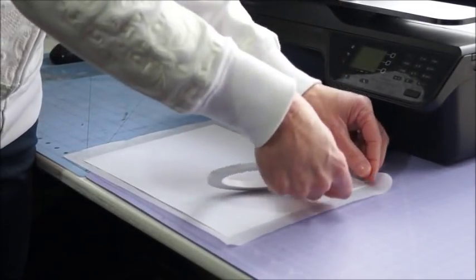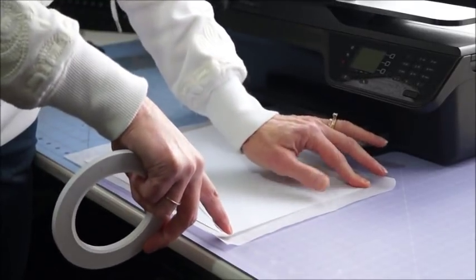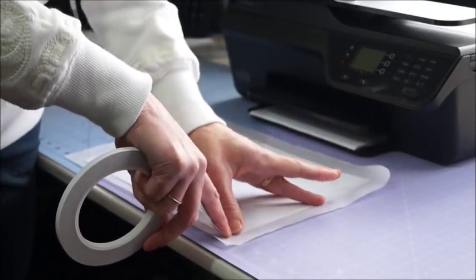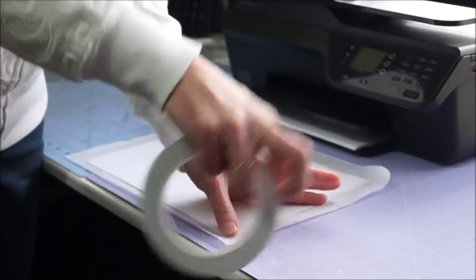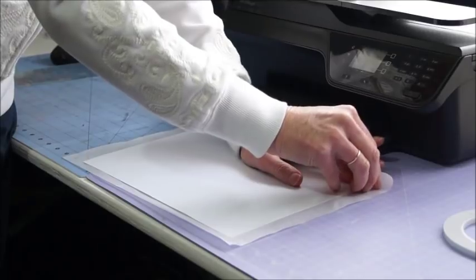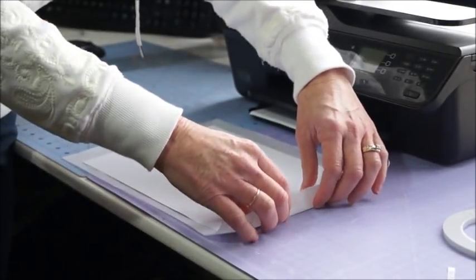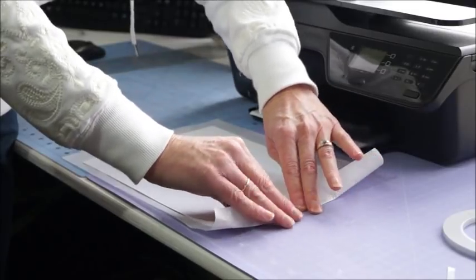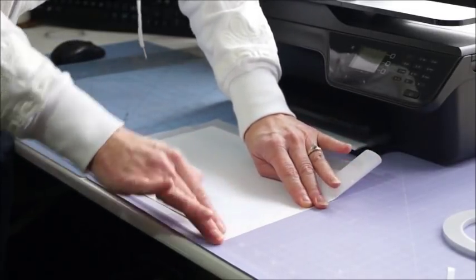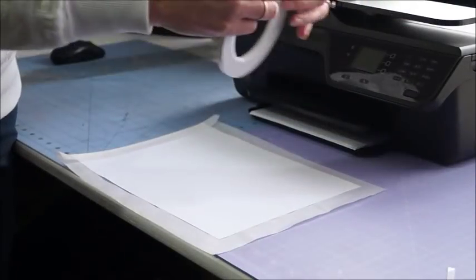Then I do another strip on this side. Some other tutorials just use sticky tape or double-sided tape in just a few places, but I found what works best for me is to make sure that the tissue paper is firmly secured all the way around.